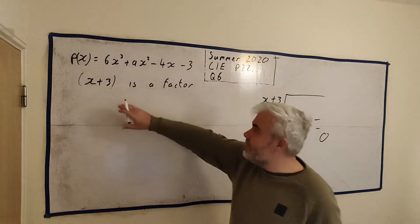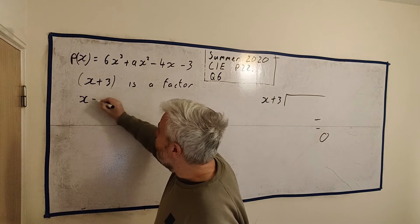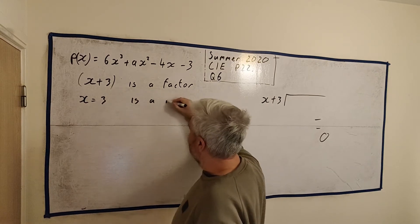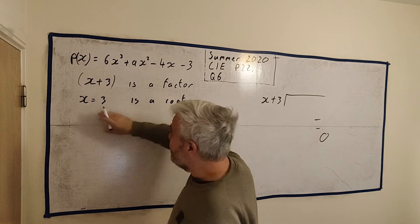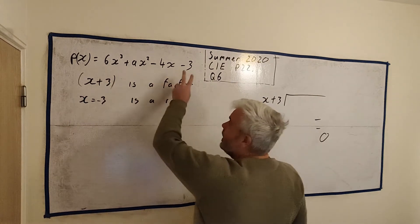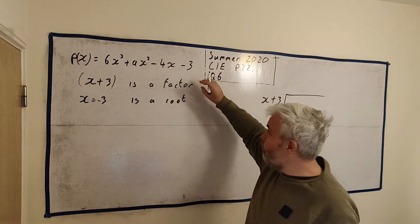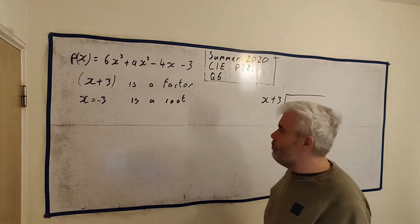But an easier way is, if this is a factor, that means x equals minus 3 must be a root, is a root. Which means if we put minus 3 into this equation here, we'll get 0. And that's because we know this is a factor, that this is a root, and that's how roots work.